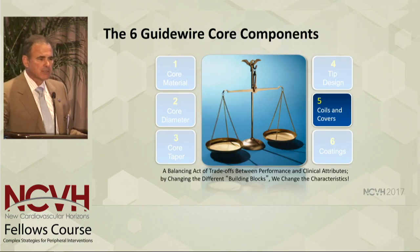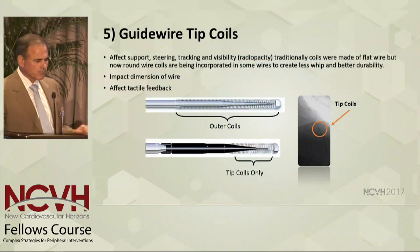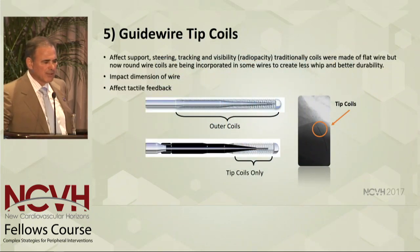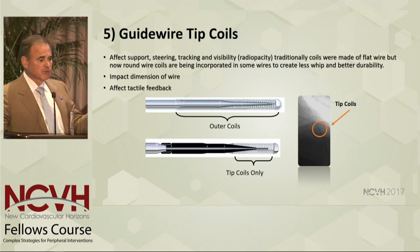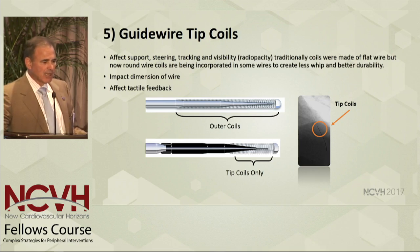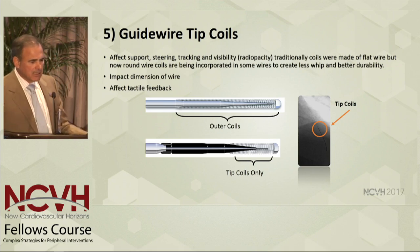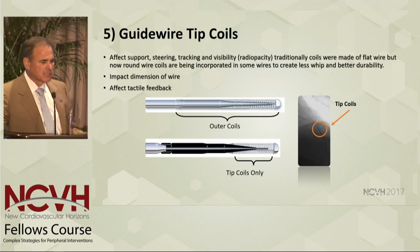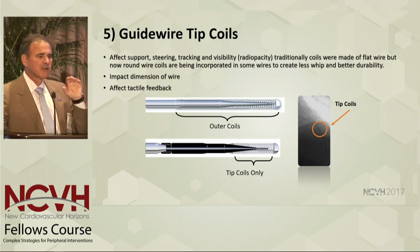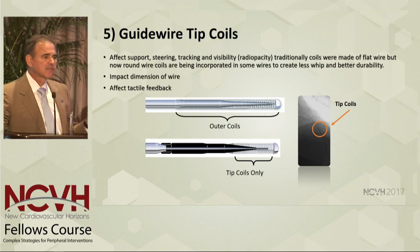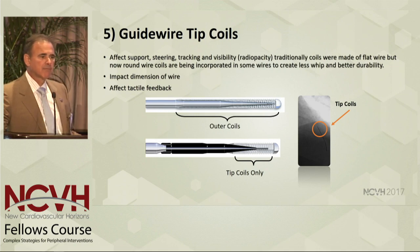In the construct of wires, we use coils and covers. Guide wire tip coils affect support, give us improved steering, and give us better tracking as you're more flexible. We have two different kinds of coils: those which are completely round and the traditional coils which are flat. Round coils give us a little bit better torque, but they do impact the dimension of the wire and thus impact tactile feedback. When we're working on a stenotic lesion, we really want maximum tactile feedback because we don't want a wire going somewhere it should not — we want to follow the true lumen.